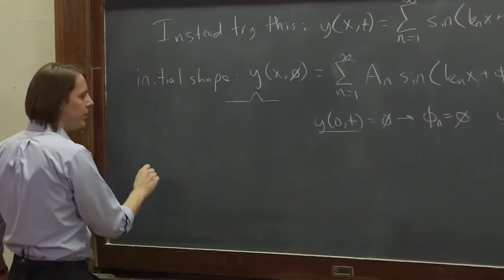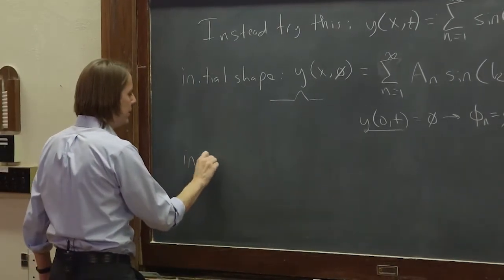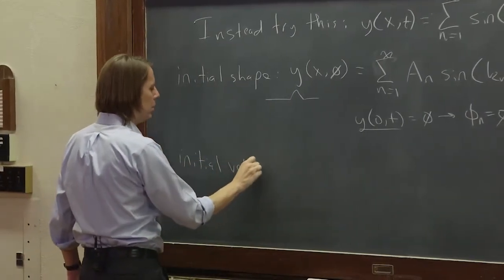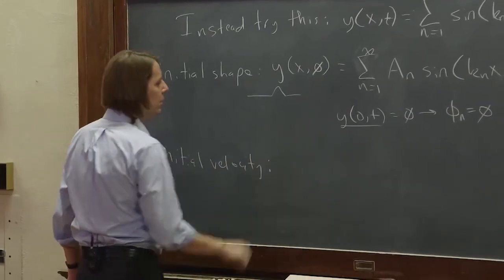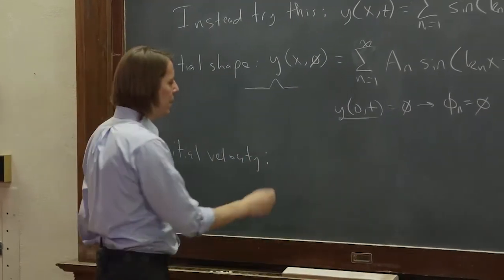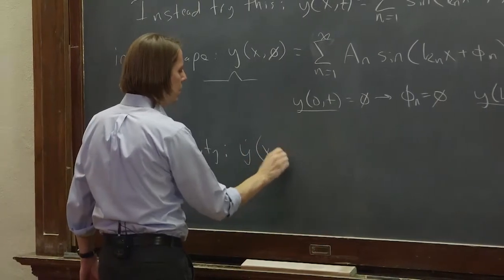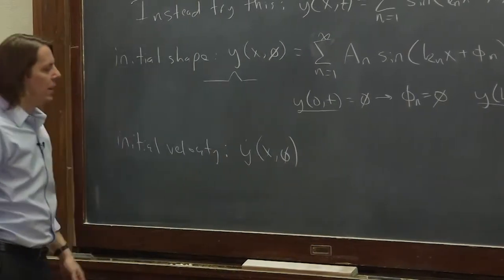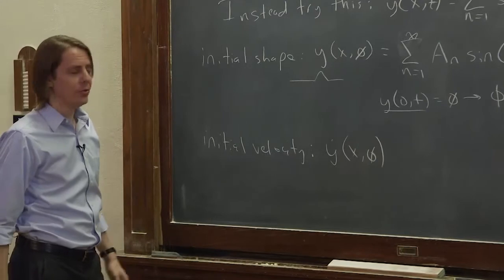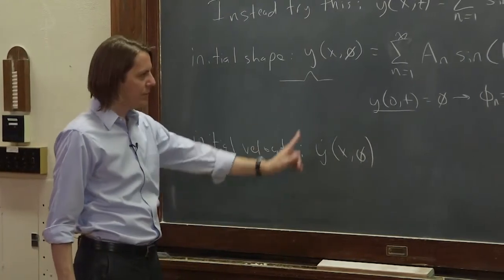But this is where it becomes really useful. Let's do the initial velocity. Okay. So that would be ẏ at all x at time equals 0. And again, this is dy/dt. This is now transverse velocity.